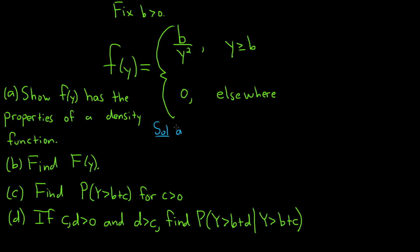The first property of a density function we should check is that f of y is non-negative for all values of y. Note that b is positive — that's really important. For y greater than or equal to b, f of y equals b over y squared. Since y must also be positive and is squared, and b is positive, we have positive over positive, so this is certainly greater than or equal to zero.